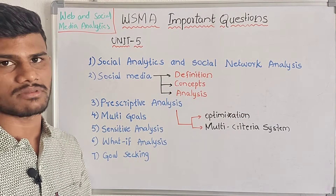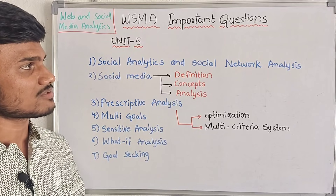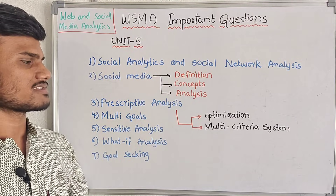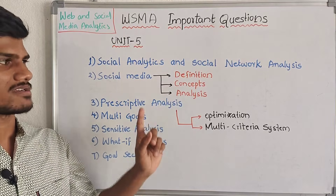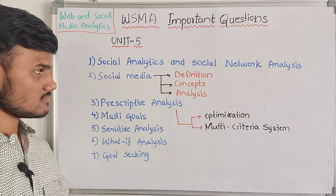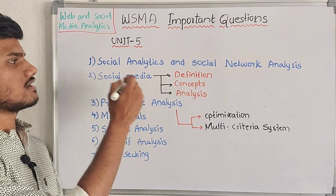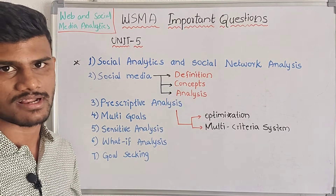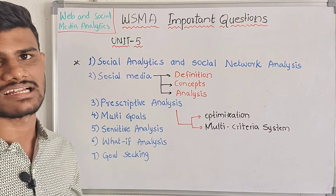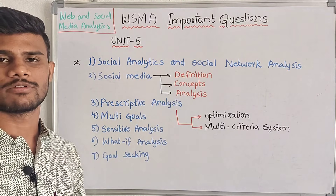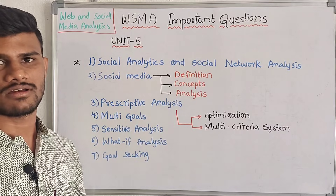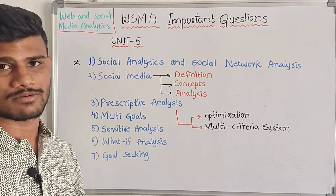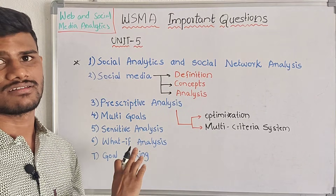Now, coming to our fifth unit. This fifth unit is completely of Social Media Analytics and Social Network Analysis. This part is next. Prescriptive Analysis is the next part. There are two parts in this one. The first part is Social Media Analytics. For example, there is YouTube — there is a number of views, a number of comments, a number of likes. You have to represent it with a bar graph.